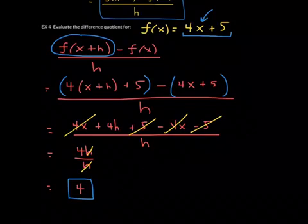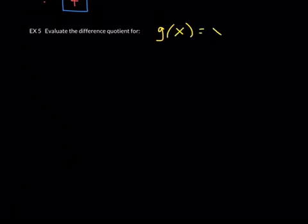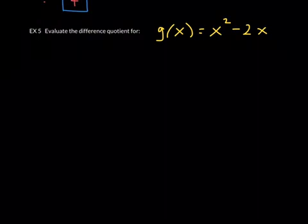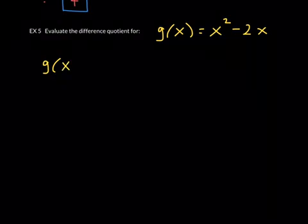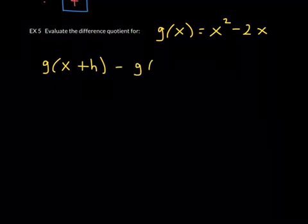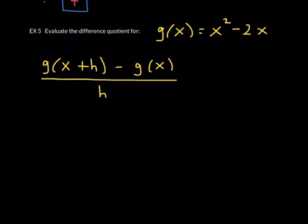This next example will be more challenging. Example 5 — the last example for the difference quotient. Evaluate the difference quotient for the function g of x equals x squared minus 2x, a quadratic function named g. The difference quotient will be g of x plus h minus g of x, all over h — note it's g, not f, because the function is named g.